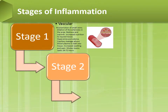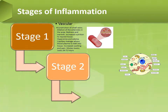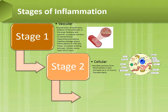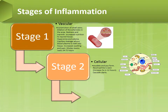Stage 2 is the cellular stage. There could be exudate and pus formation, neutrophilia — usually about a five-times increase in 12 hours — and then cascading starts.